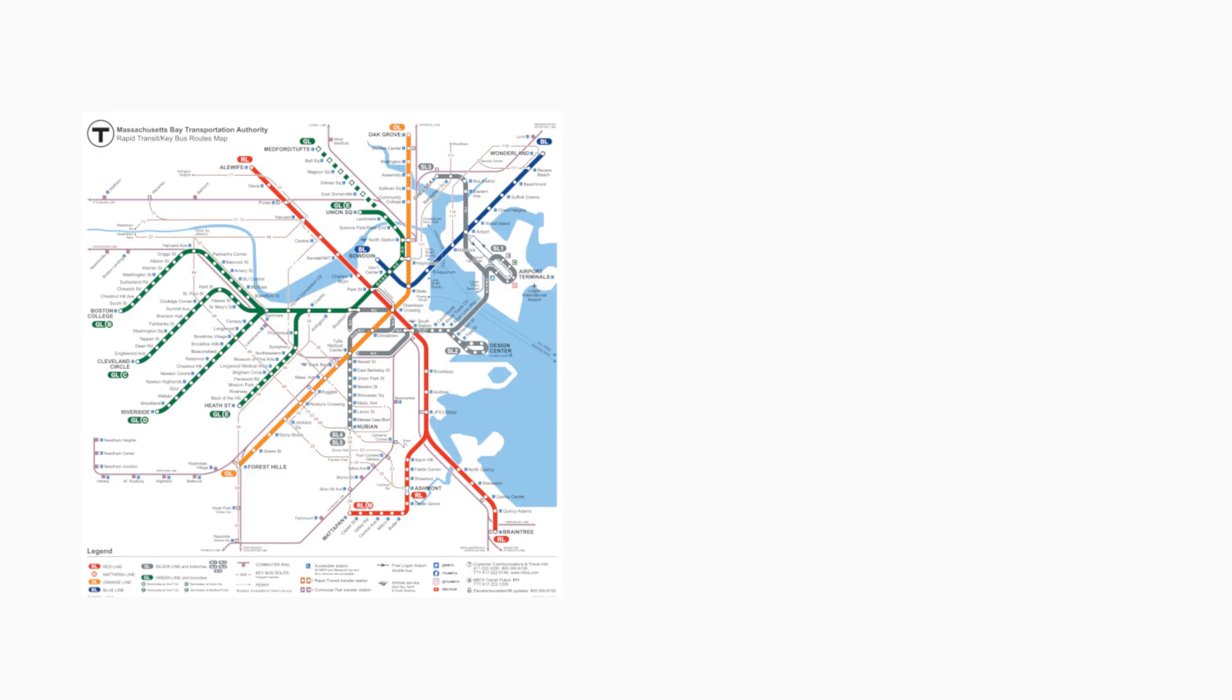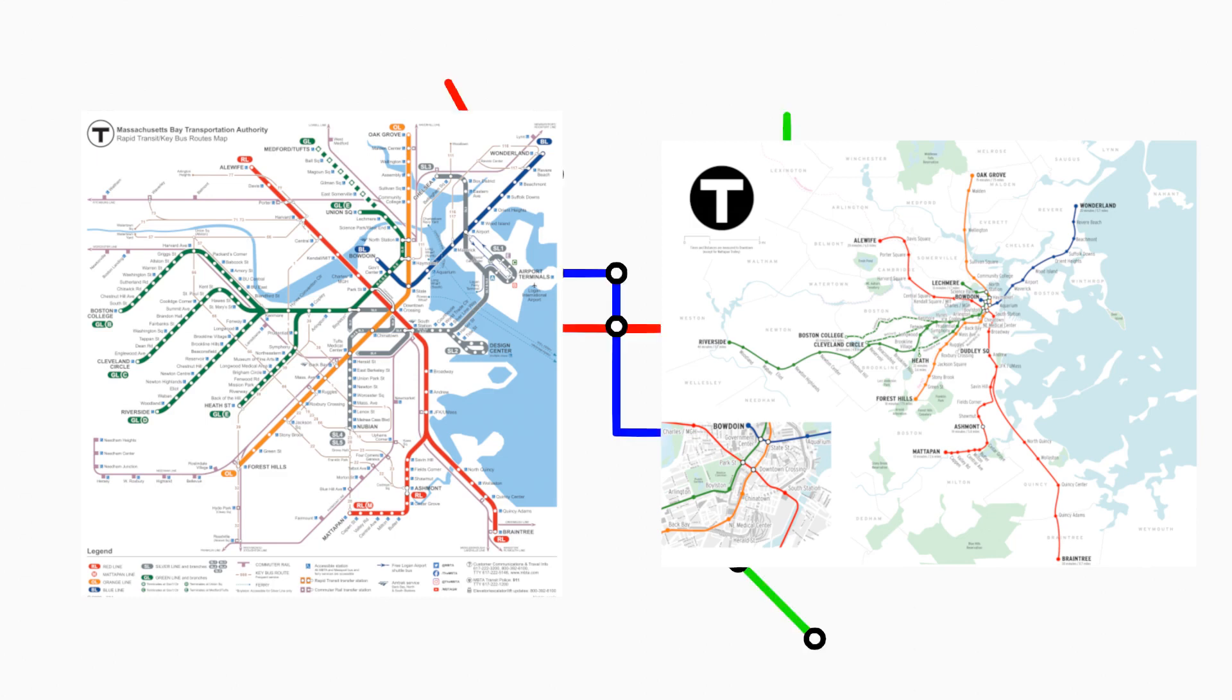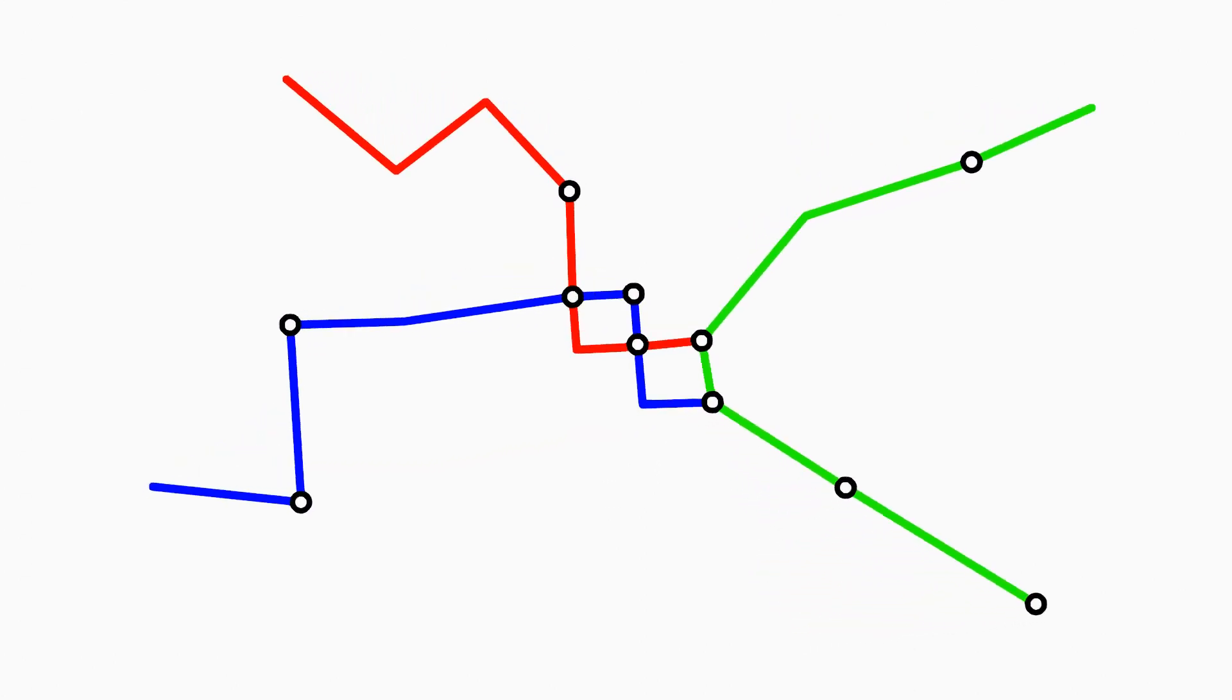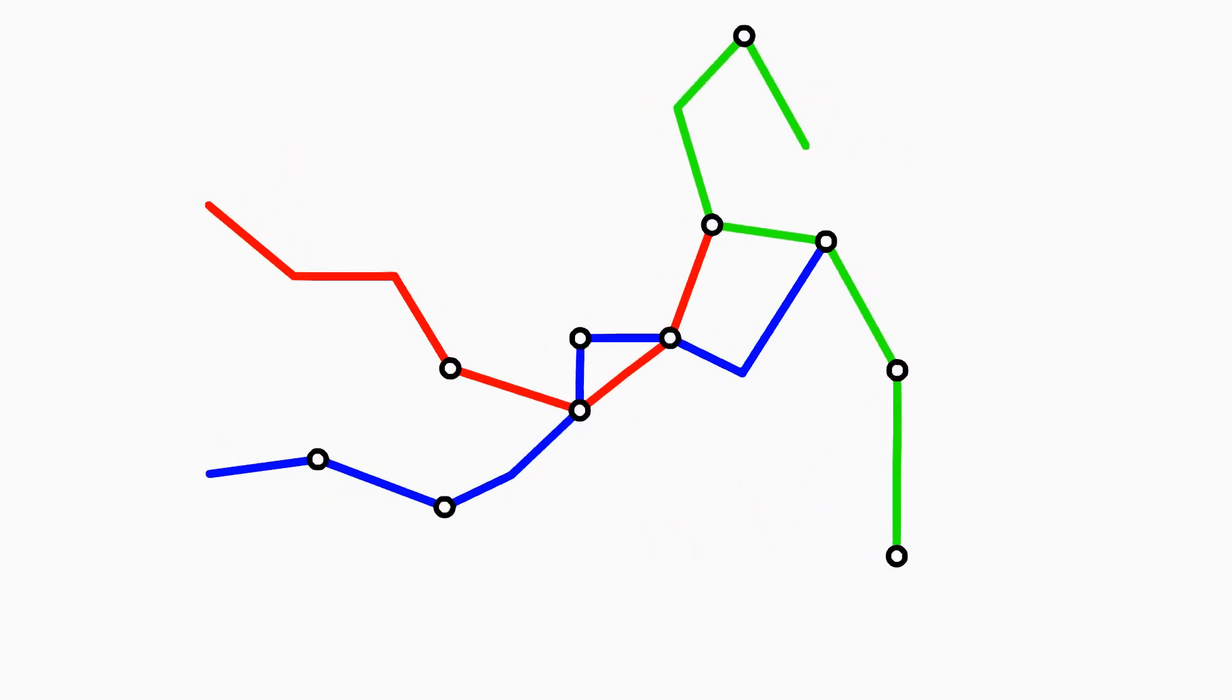A Penrose diagram is a physicist's subway map to space and time. A subway map just shows how stops are connected and can distort the distances as much as it wants. You can stretch and squeeze and move the stops around, but so long as the way that they are connected stays the same, it's still a good map.